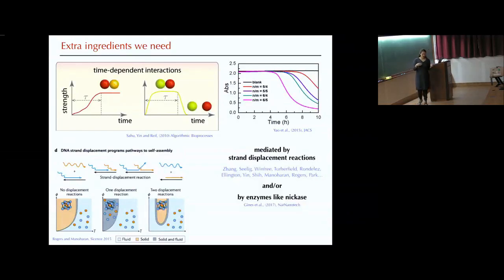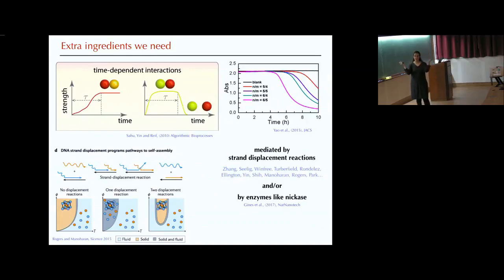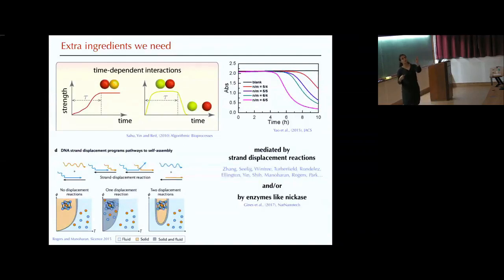In some experiments done with these tiles I showed at the beginning, they use a cycle of light — like day and night, temperature and light — to oscillate and cycle things, separating structures. But you cannot go beyond a dimer using this approach without creating problems.